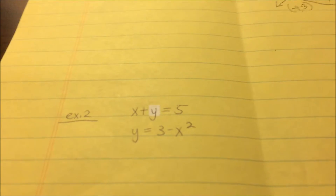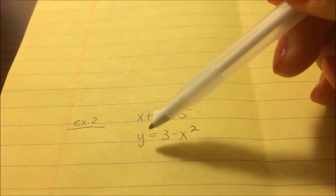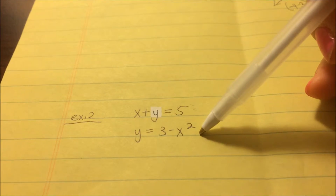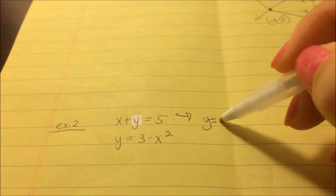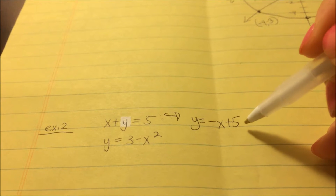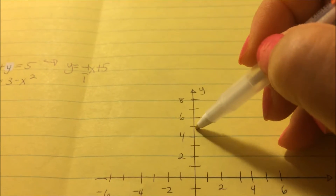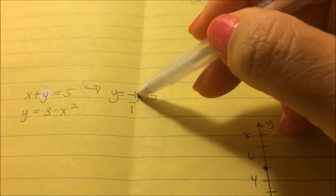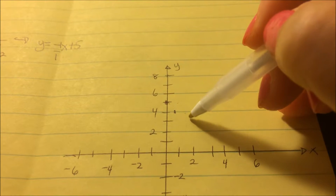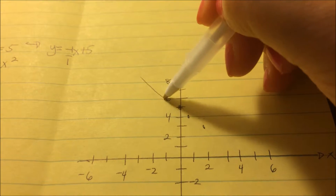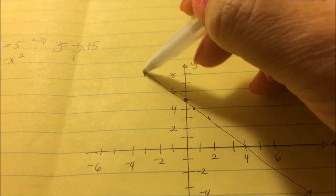Now example two. We have x plus y equals 5 — a linear equation — and y equals 3 minus x squared, which is a parabola. Changing the linear equation to slope-intercept form: y equals negative x plus 5. The y-intercept is at 5 and the slope is negative 1, so we run 1 and go down 1 repeatedly to graph the line.